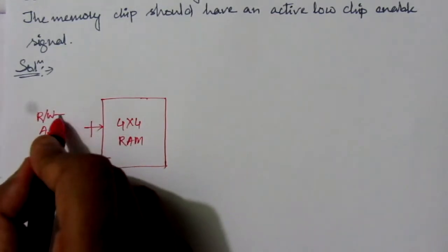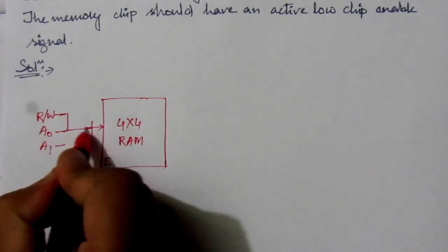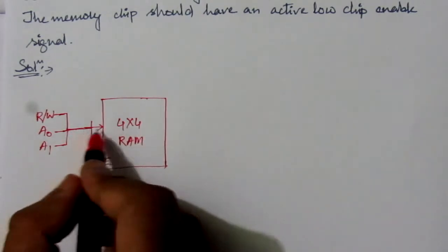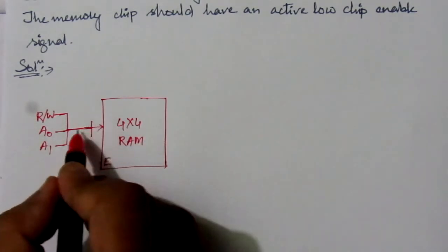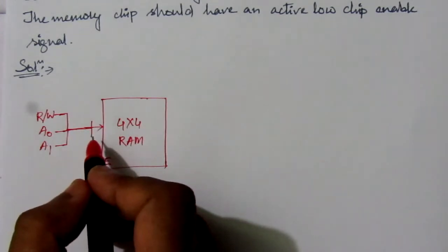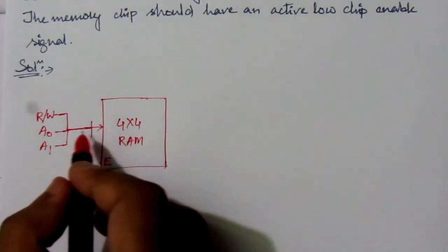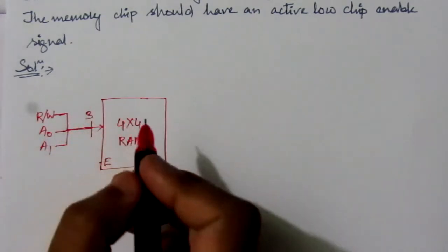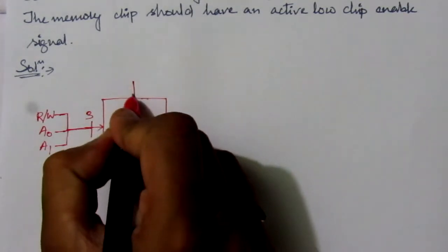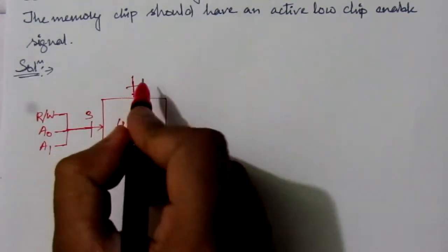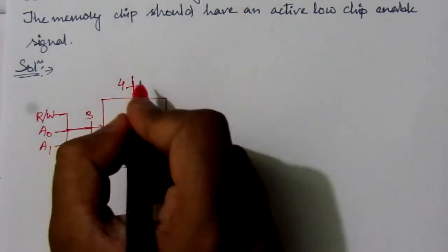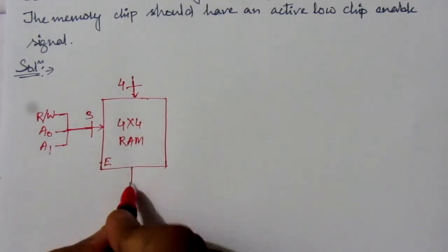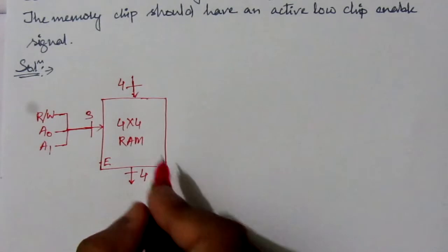In array logic design, we use a special symbol: three parallel lines with a cut, representing parallel input lines. Here we have three parallel control inputs, so we write 'three'. We also have four input data lines and four output lines, represented with the array logic symbol showing 'four' on each side.